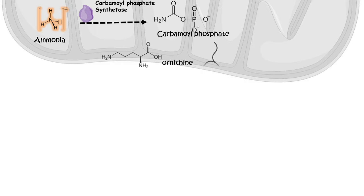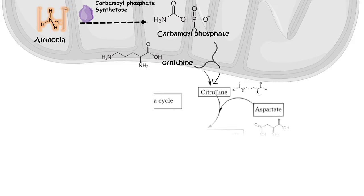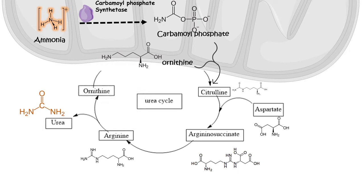Carbamoyl phosphate combines with ornithine, which is already present in the liver mitochondria, to form citrulline. Via several intermediates — aspartate, argininosuccinate, and arginine — ornithine is regenerated, ready for another round of the urea cycle. The key step is the conversion of arginine to ornithine: ornithine is regenerated and urea is released and excreted.